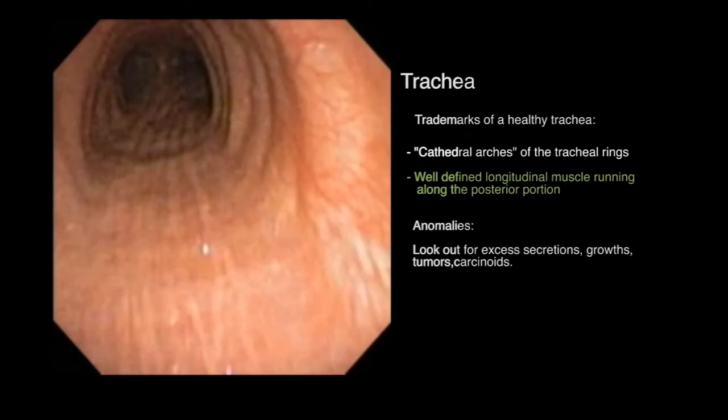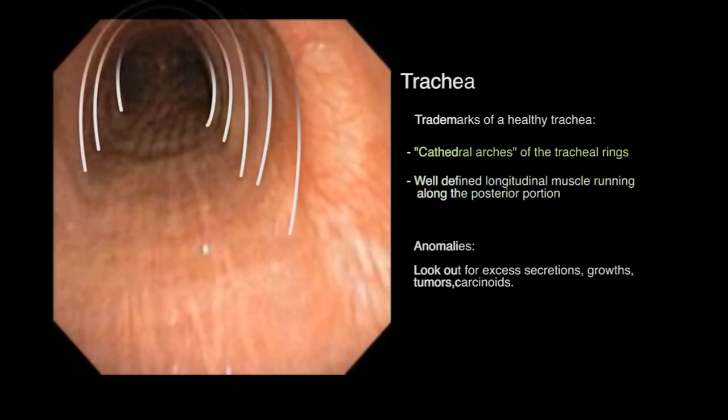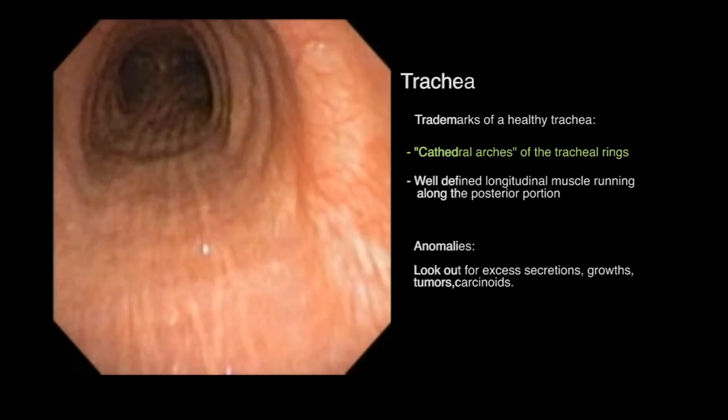Notice here the racing stripes, or longitudinal muscle, that run along posteriorly. The cathedral arches are a trademark for healthy tracheal rings that run the length of the trachea anteriorly. The esophagus lies directly behind the trachea.